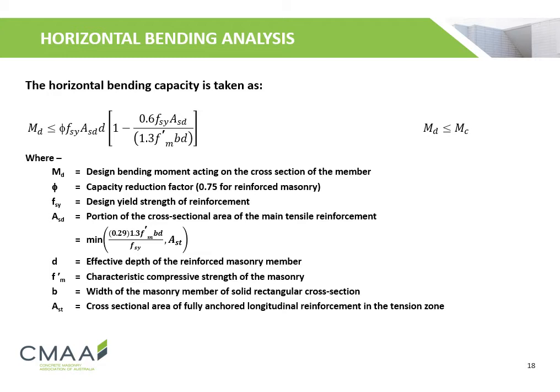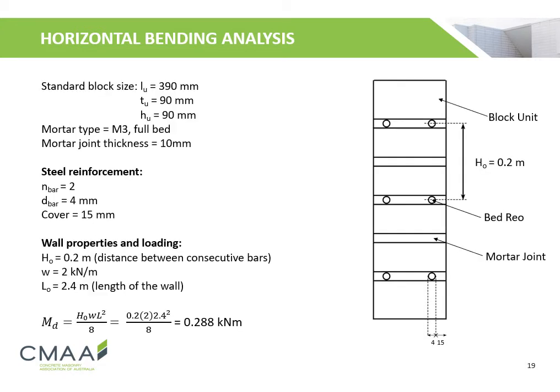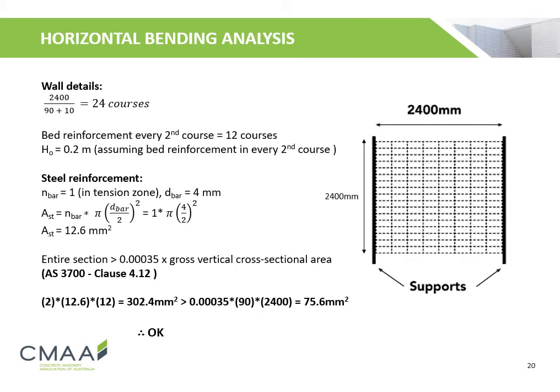Using a standard block size with M3 mortar and bed reinforcement assumed in every second course, an out-of-plane loading of 2 kN per meter is uniformly distributed onto the wall. A cover of 15 mm is used and two steel bars with a bar diameter of 4 mm are used. The design bending moment is calculated to be 0.288 kNm. Using a 2.4 m high and long wall, there are approximately 24 courses. Bed joint reinforcement covers every second course, effectively covering 12 courses. The number of bars in the tension zone is 1, and the area of steel reinforcement is calculated to be 12.6 mm².